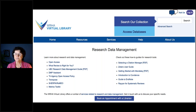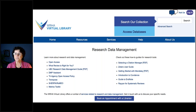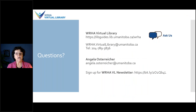The last resource is the Metrics Toolkit. If you're a researcher required to provide metrics of your work, there are all sorts of different kinds — Altmetric, Blog Mentions, H-Index, Journal Impact Factor. This excellent toolkit tells you how each is calculated, where to find them, how they should or should not be used, and how to use them in grant applications, curriculum vitae, or promotion packages. That, in a nutshell, is the research data management services the WRHA Virtual Library provides. Bookmark our URL so you can get to all our resources quickly.